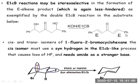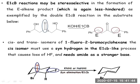For 1-fluoro-2-bromocyclohexane (a cis isomer), the E1cB mechanism requires a very strong base such as sodium amide or potassium amide (KNH₂ or NaNH₂). This undergoes syn elimination, where hydrogen and fluorine are removed together to form a double bond between the two carbon atoms. This is another example confirming that E1cB proceeds via syn elimination to give the product.